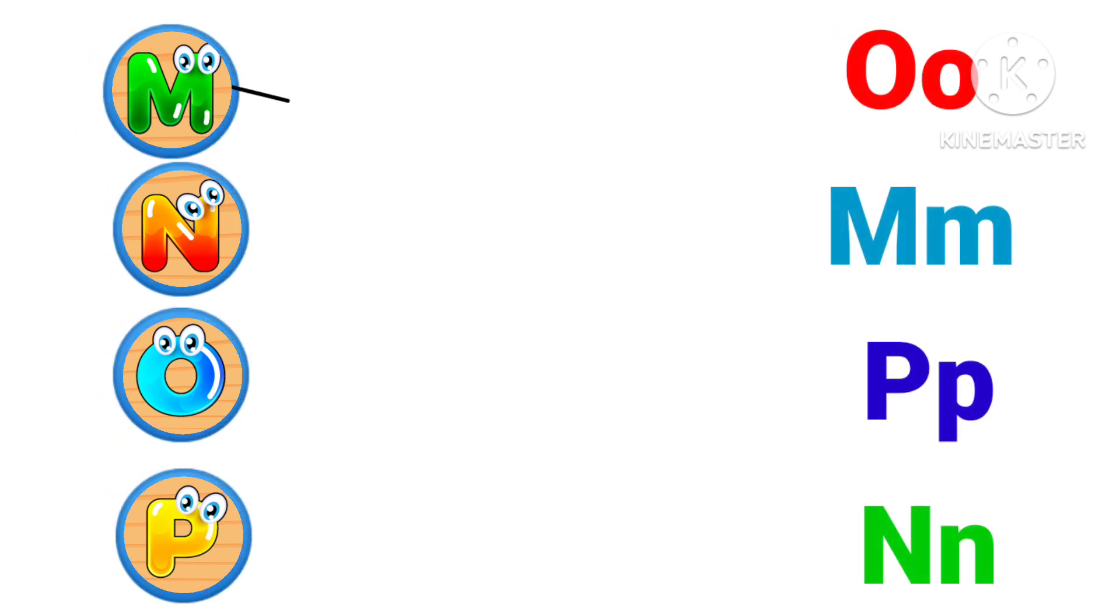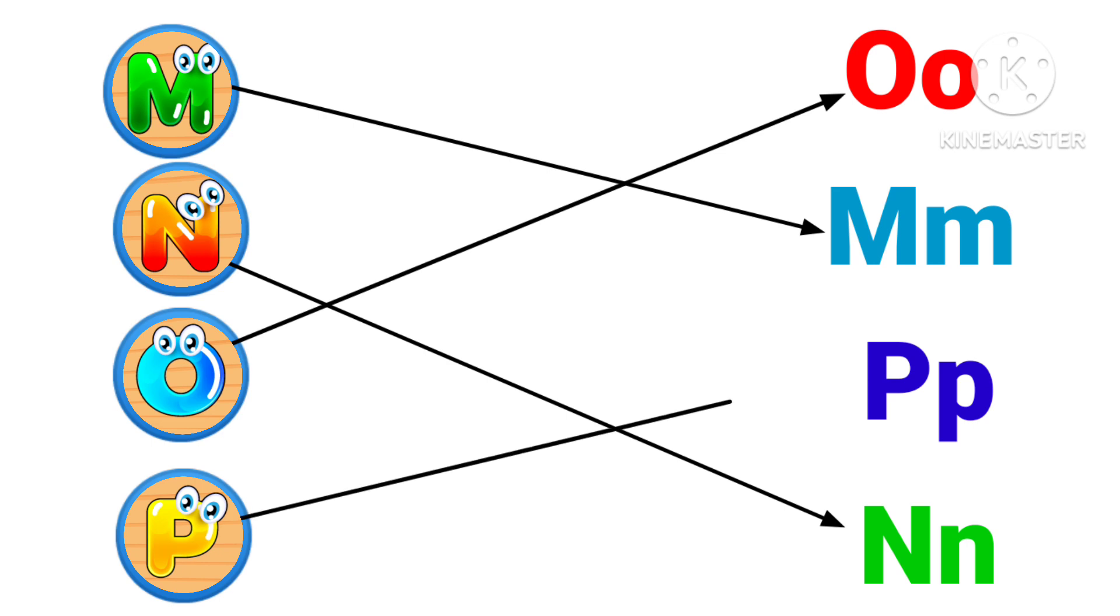M M for Mango, N N for Nest, O O for Orange, P P for Parrot.